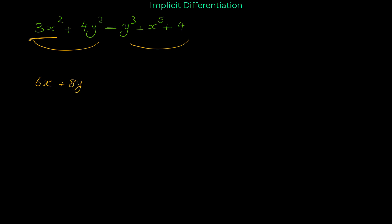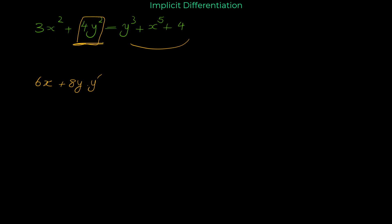Subtract the power: y to the 1, so just 8y. But you have to multiply this by y prime. Whenever you have an implicit relation and you want to find y prime, when you take the derivative of a term involving y, you take that derivative and multiply it by y prime.